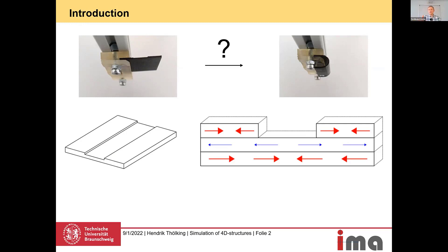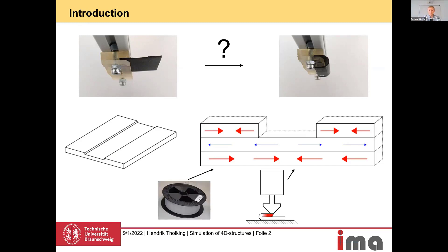This bending transformation is directly dependent on the strain state in the body, and the strain of the body is dependent on the material we use, the printer, and the activation we're using in our 4D printing process. The reviewed simulation processes are purely numerical.